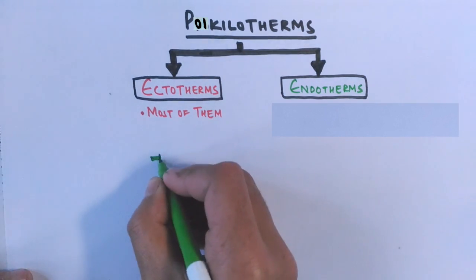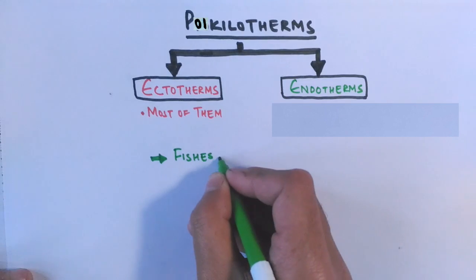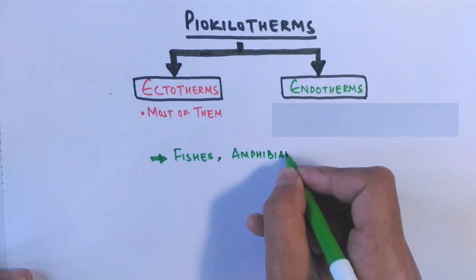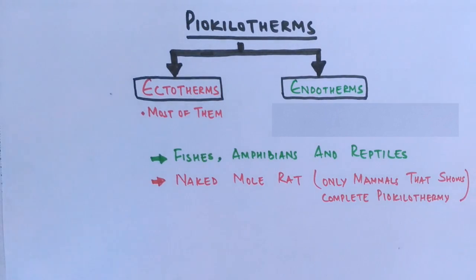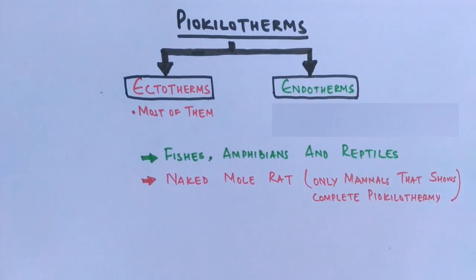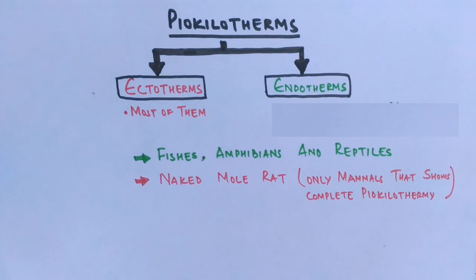Fishes, few amphibians, and majority of reptiles rely on poikilothermy, and we have only one mammal called naked mole rat which exhibits this thermoregulation process. Basically, these all thermoregulation processes and mechanisms are designed to return your body to homeostasis.